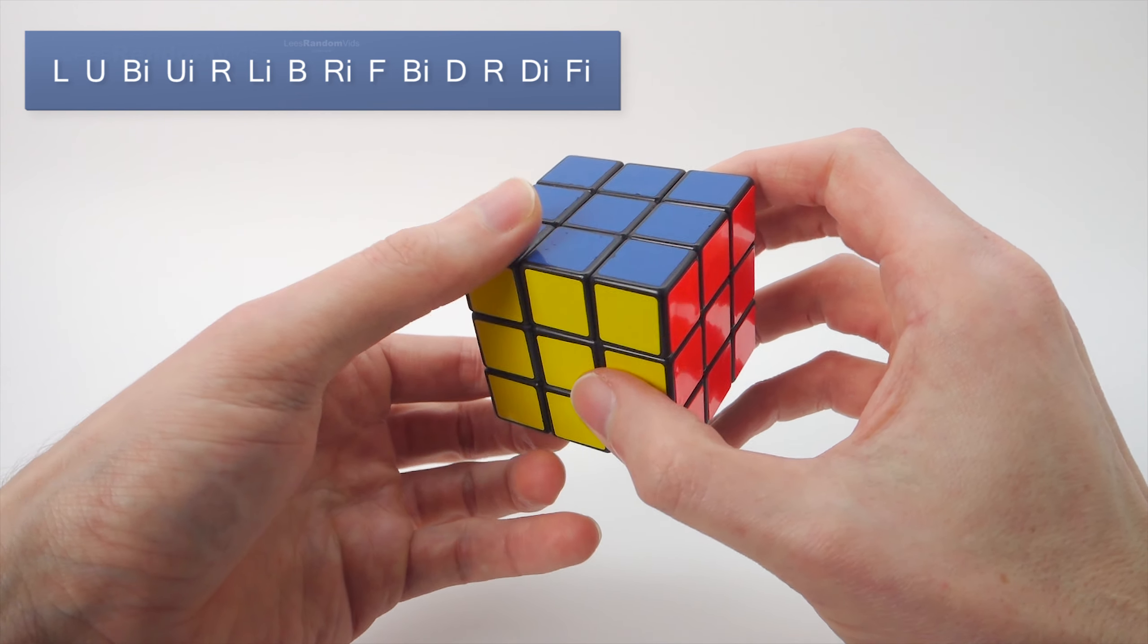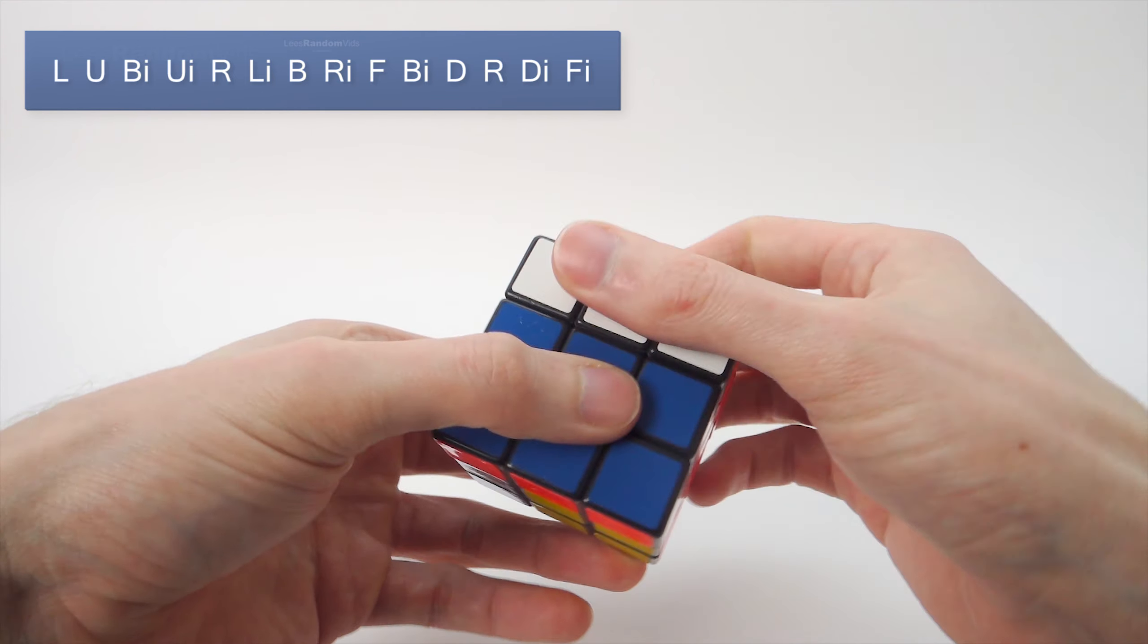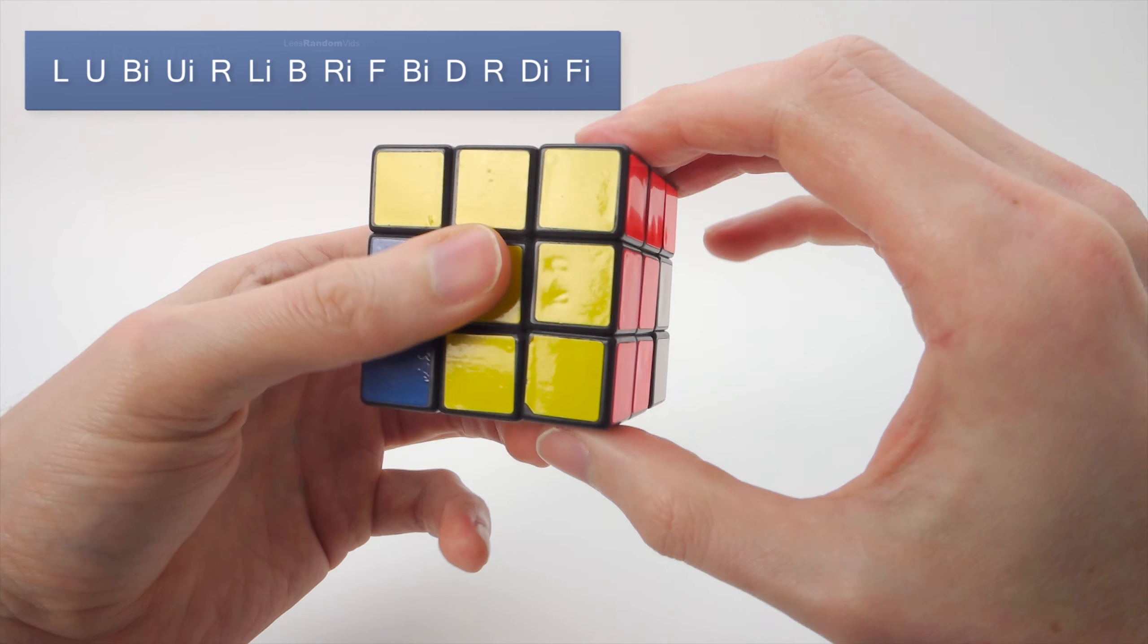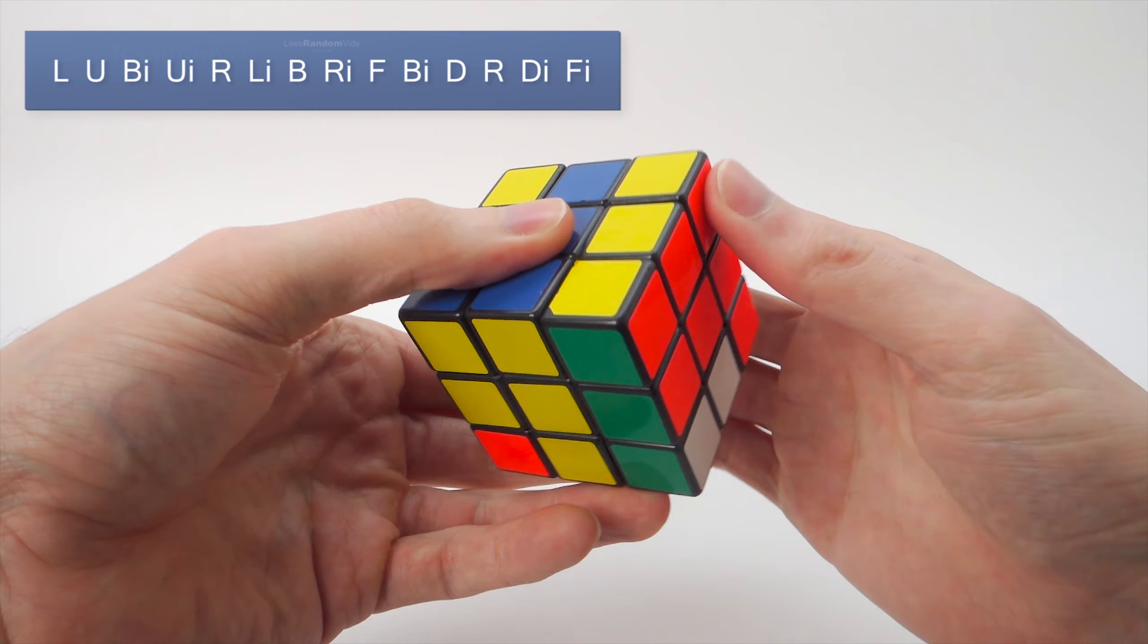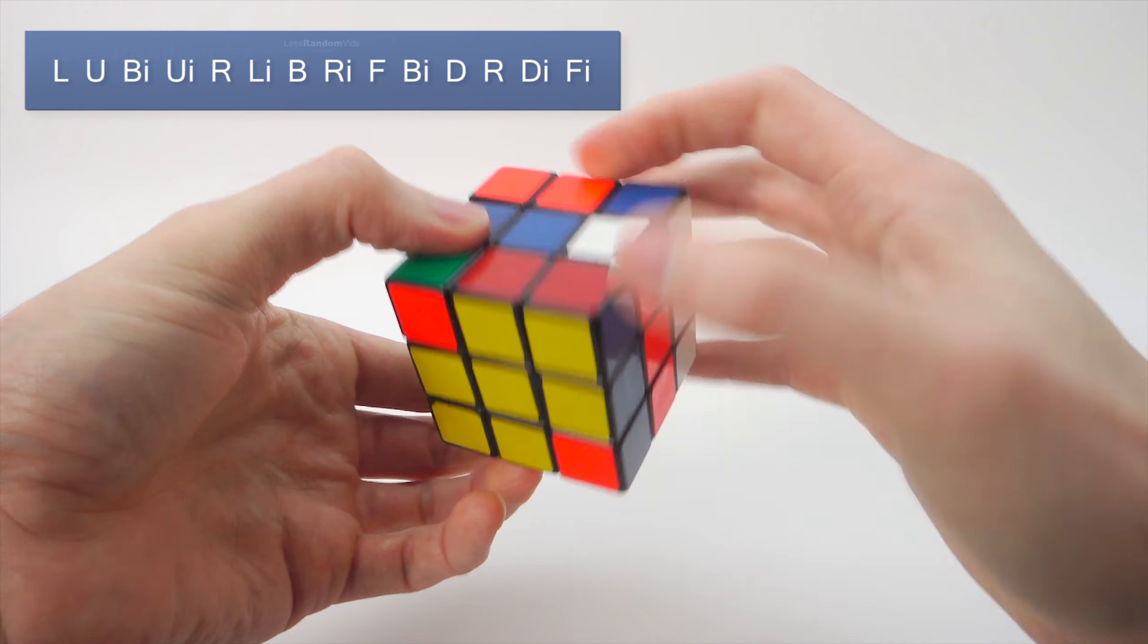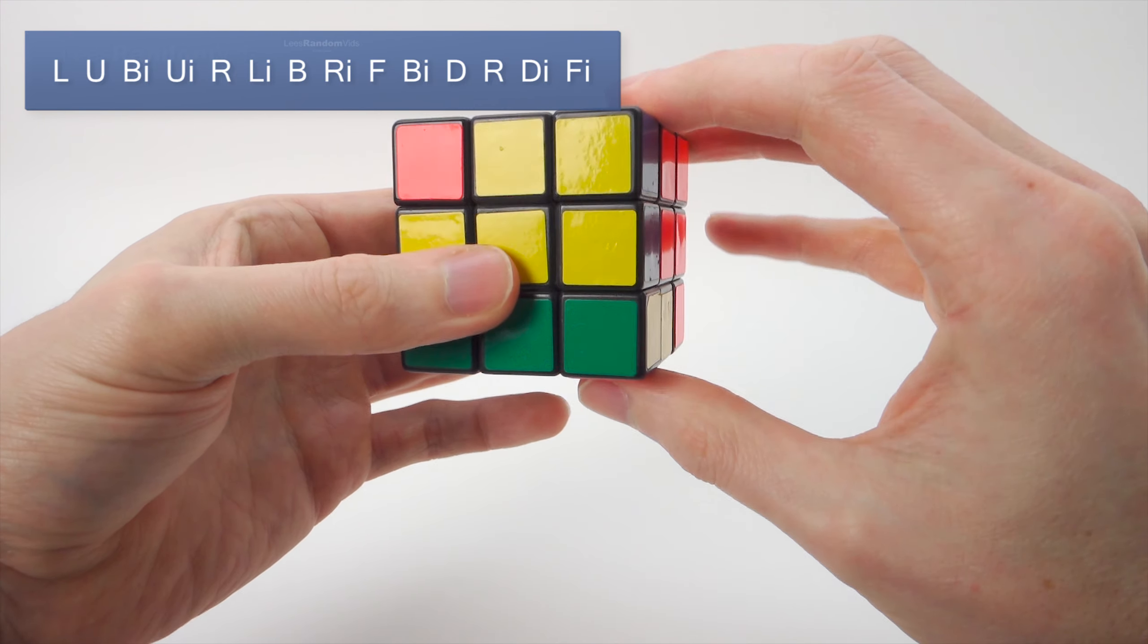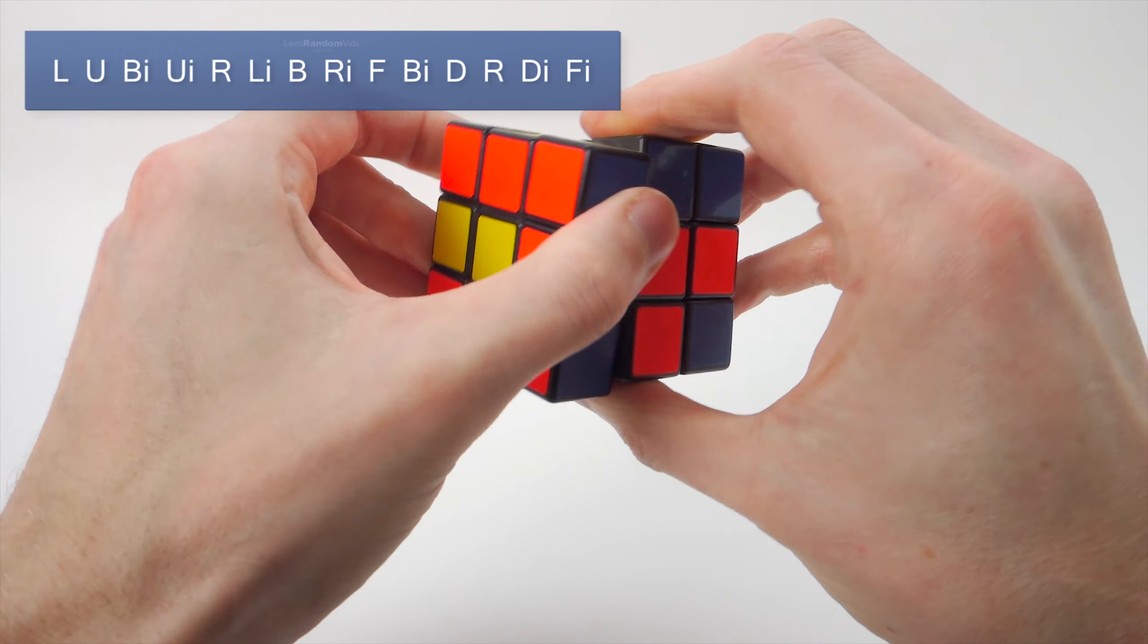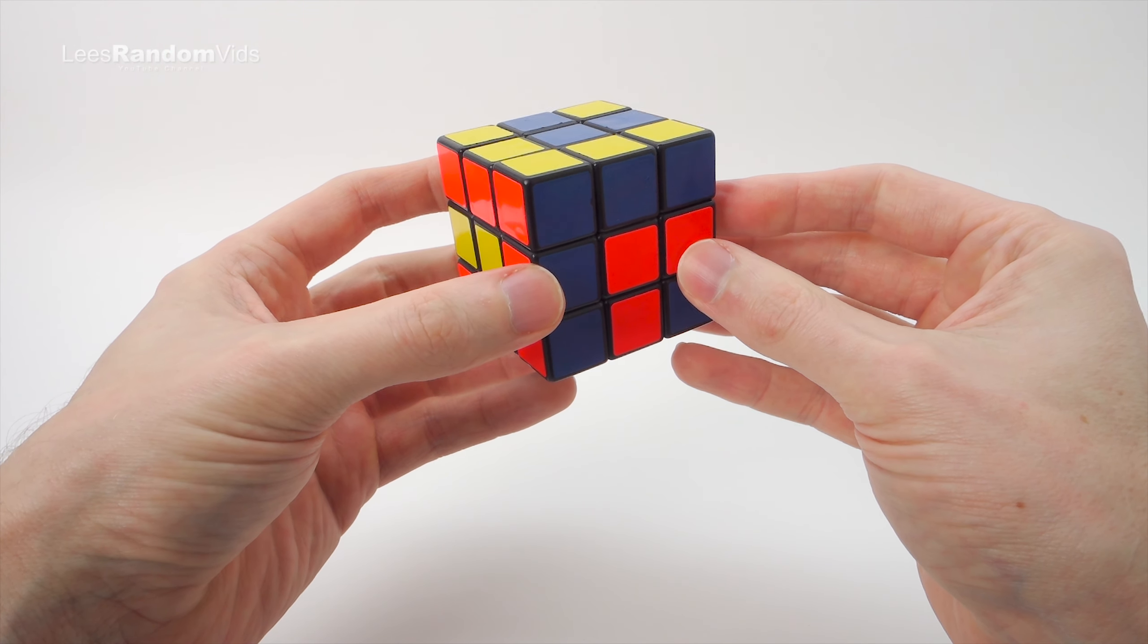So let's do that then. L, U, B', U', R, L', B, R', F, B', D, R, D', F'. And that gives us this anaconda pattern.